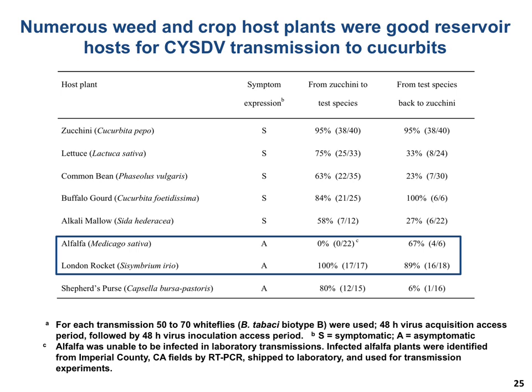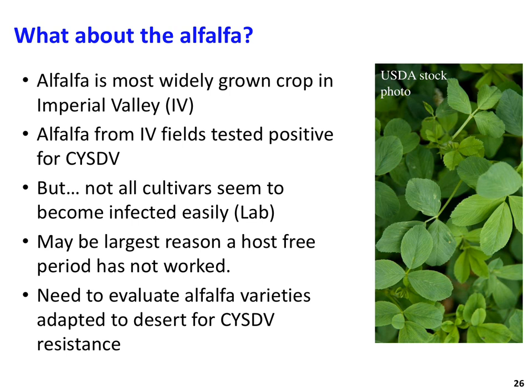Alfalfa — the most widely grown crop in the Imperial Valley and a perennial present in the field for many years — was unable to be infected in transmission from zucchini in laboratory tests, even though we had confirmed infection in the field multiple times. A limited test using field-infected alfalfa indicated relatively efficient transmission back to zucchini. The difficulty in transmitting from zucchini to alfalfa suggests some cultivar-specific resistance, but we need to do more work on that aspect. Since this experiment was conducted, we have been able to transmit to the most widely grown cultivar of alfalfa in the valley.